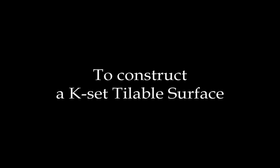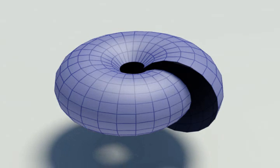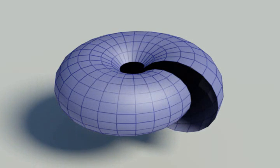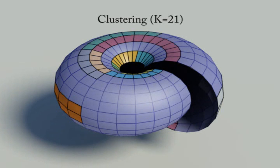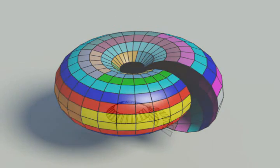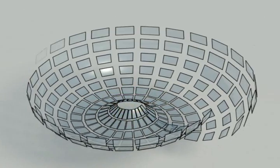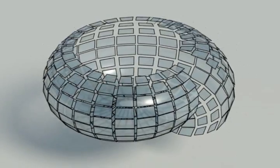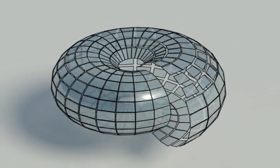To construct a k-set tileable surface from an input surface, if we cluster the surface quads and simply replace them with the mean shape in each cluster, the surface breaks and the connectivity among the quads is lost.